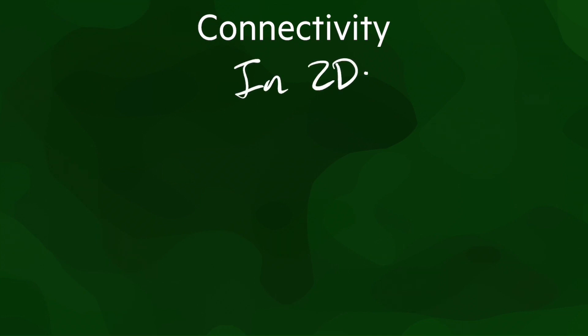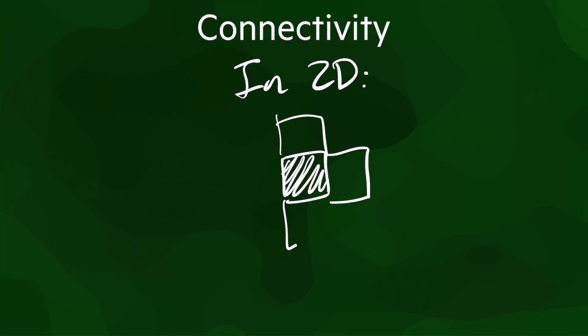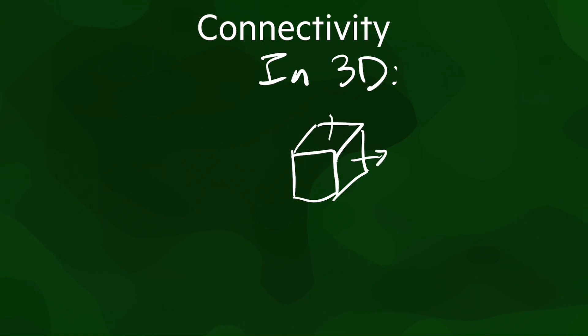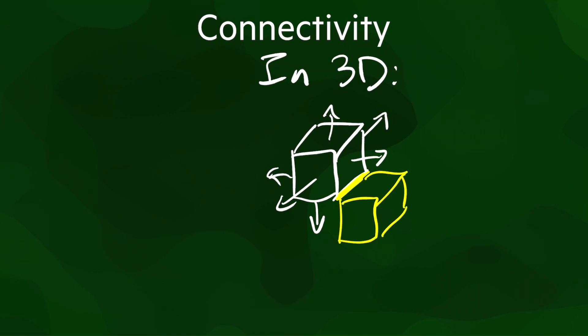In 2D, there is 4-connectivity, in which starting from a given pixel, the pixels up, down, left and right from it are considered connected. And there is 8-connectivity, in which also the diagonal pixels are considered connected. In 3D, there is 6-connectivity, in which starting from a given voxel, the voxels adjacent to it on its left, right, top, bottom, front and back are considered connected. There is 18-connectivity, which considers also the 12 other voxels that are incident to it along an edge. And there is 26-connectivity, which considers also the 8 other voxels that are incident to it along a vertex.